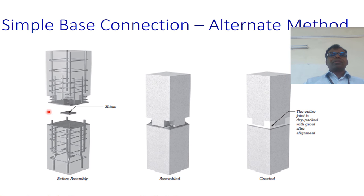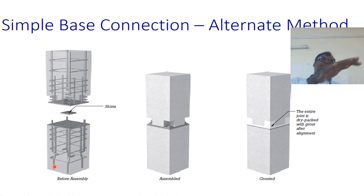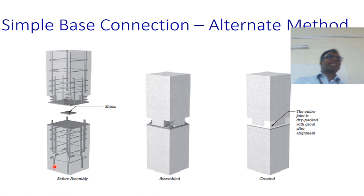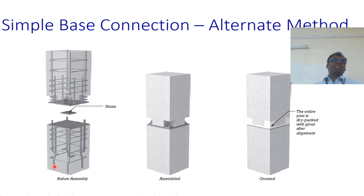The main rod is bent and taken away, and this is the development length it has to have — all based on IS-456 standard. When you want an alternate solution, it should still satisfy the codal provisions like IS-456, which is the governing criteria for concrete design. The use of these practical systems comes from practical considerations.